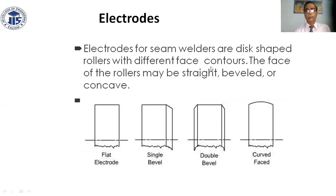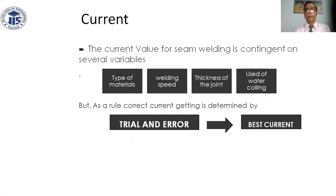The rollers may be shaped — straight, bevel, or concave; flat, bevel, double bevel, or concave. Current value for seam welding depends on several variables: type of materials, welding speed, thickness of joint, and water cooling. The correct current is generally determined by trial and error.